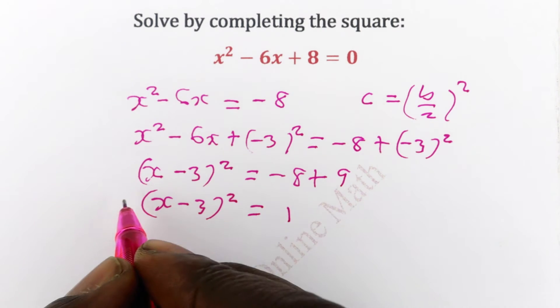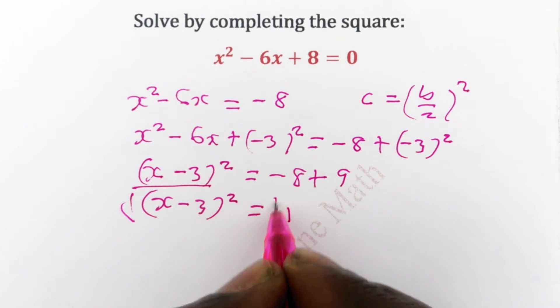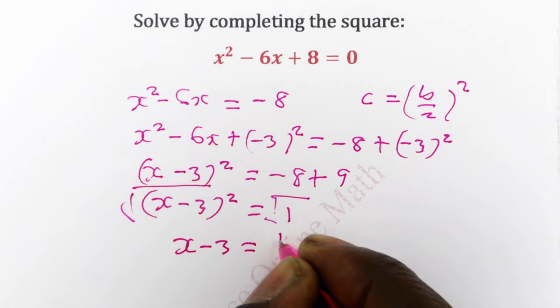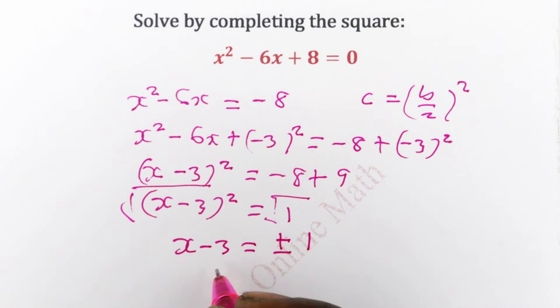The next thing is to get the square root of both sides. You will have x minus 3 is equal to plus or minus 1. So that x is equal to 3 plus or minus 1.